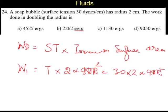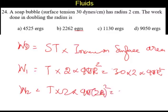In the second case, it is going to be T times 2 times 4π. The radius is doubled to 2R, so the whole square becomes 4. So it is going to be 30 times 2 times 4πR² times 4.